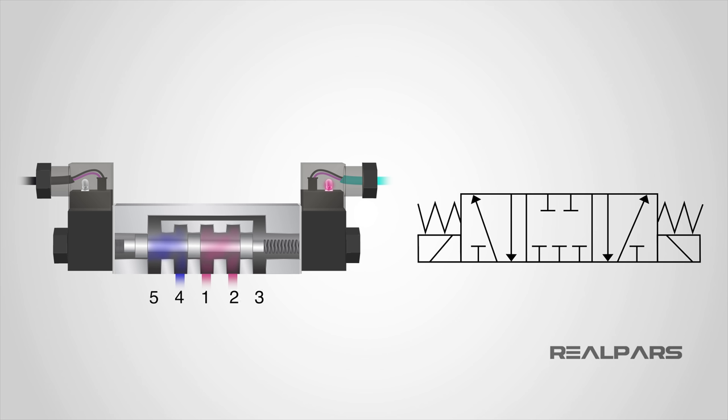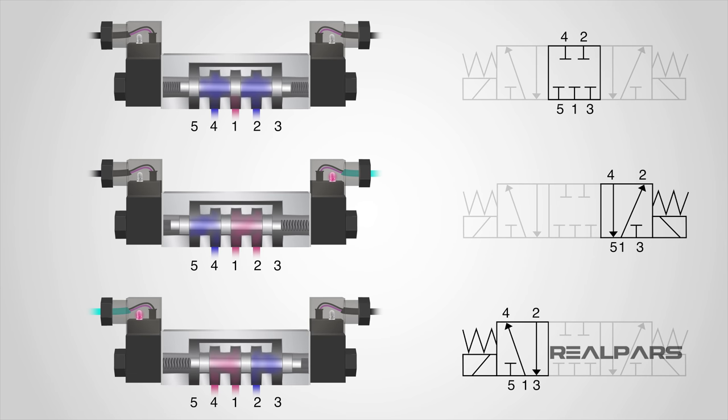The number of ports a valve has is shown by the number of endpoints in a given box. We should only count the ports in a single box once per symbol. For example, in the three-position valve, there are three boxes which show the three possible positions, but the valve has five physical ports.